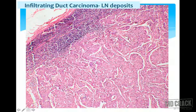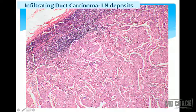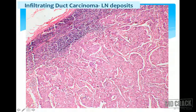A lymph node section shows a lymphoid follicle with perilymph node fat. Tumour deposits are seen initially in the paracortical area or just beneath the fibrous capsule in the sinusoidal space. In this case, almost the entire lymph node is replaced by tumour deposits — a very classical case of infiltrating ductal carcinoma metastatic to lymph nodes.